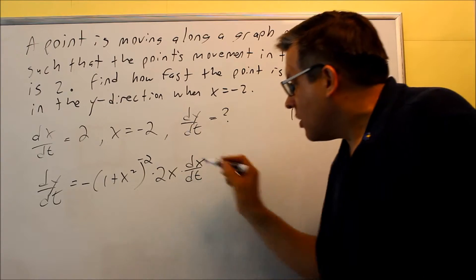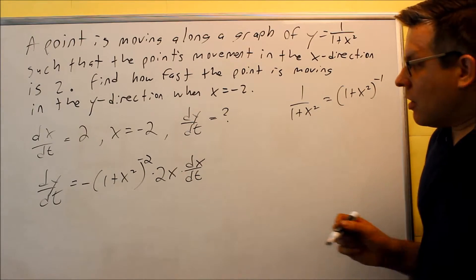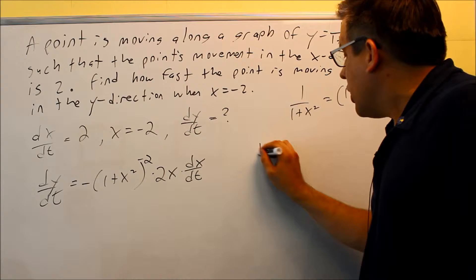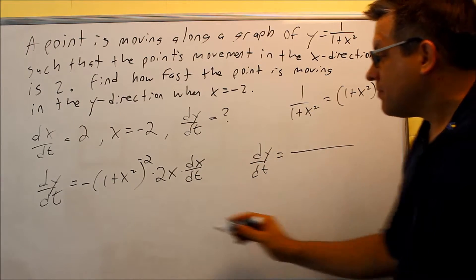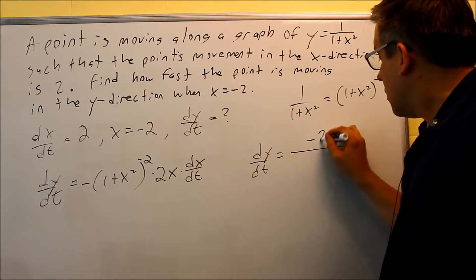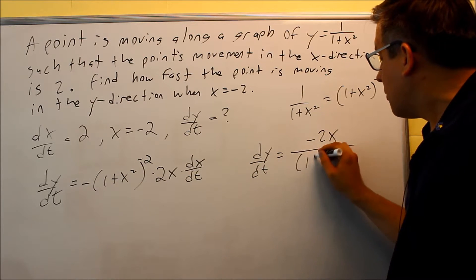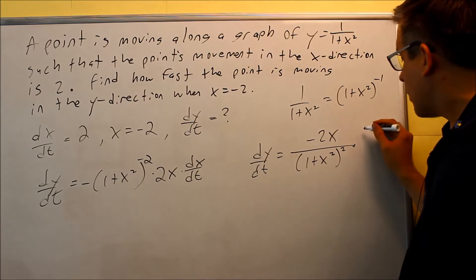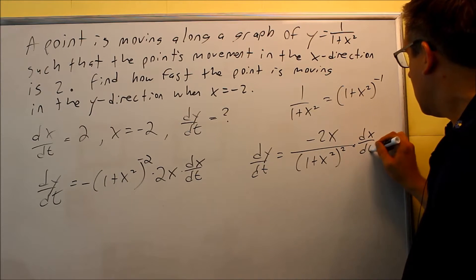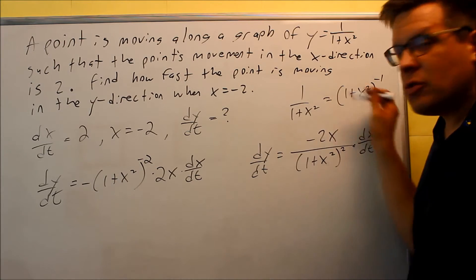Now we have this complete. We can rewrite this, so dy/dt is going to be: on top you have a negative and a 2x, so negative 2x; in the bottom, (1 + x²)², and then multiply that by dx/dt.